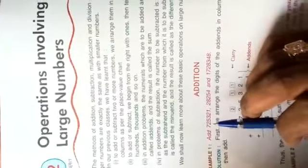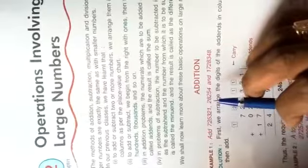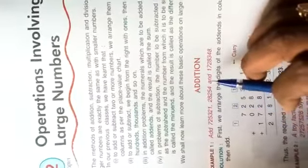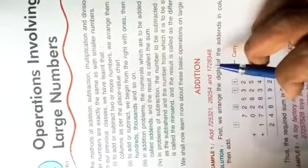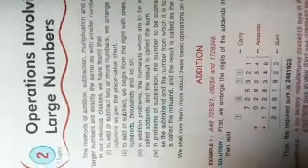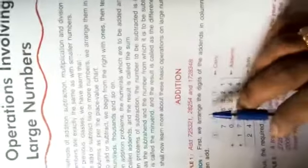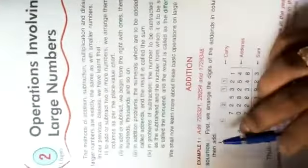That means 725321, 28254, and 1728348. Children, here's the solution. First, we arrange the digits of the addends in columns, and then add.